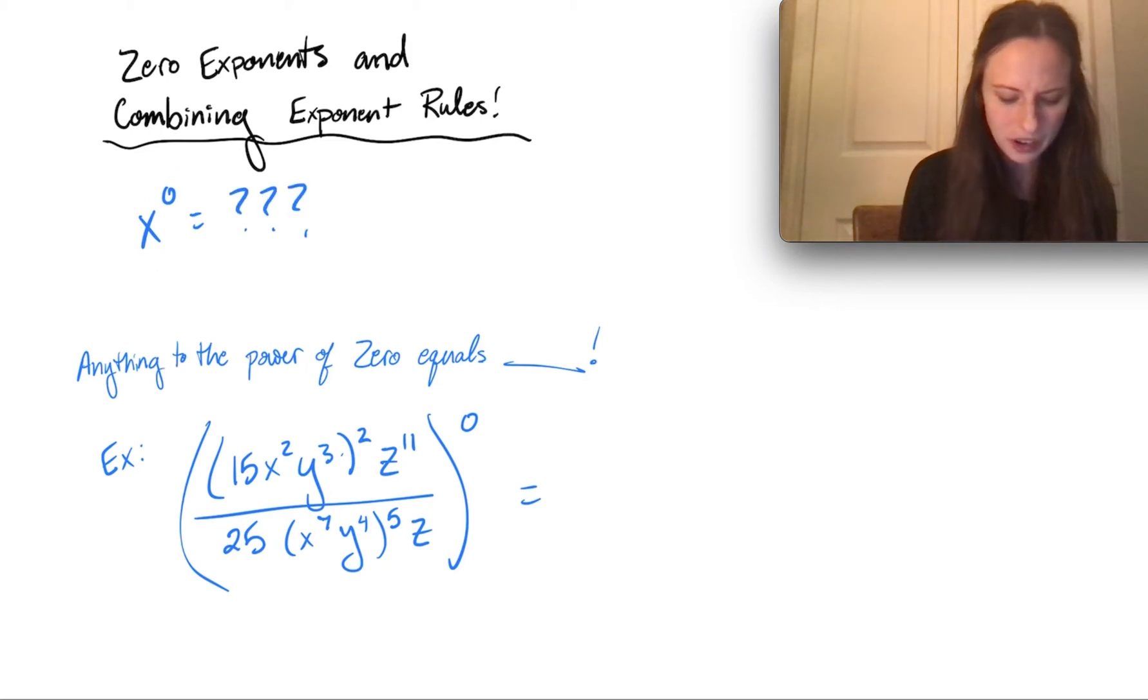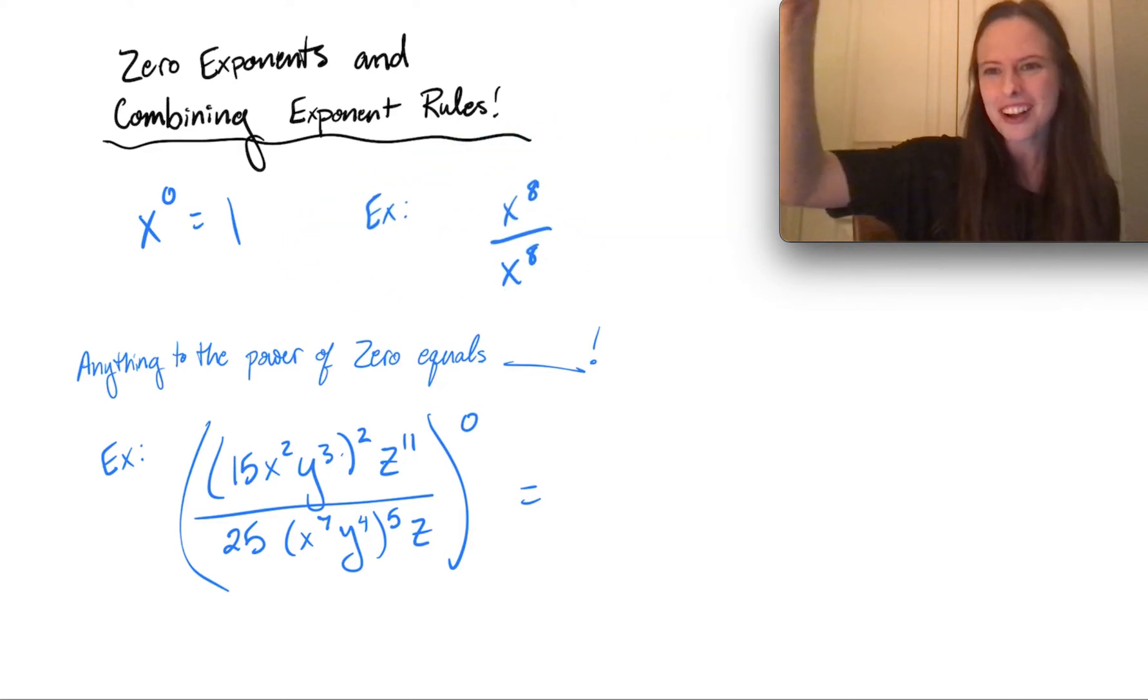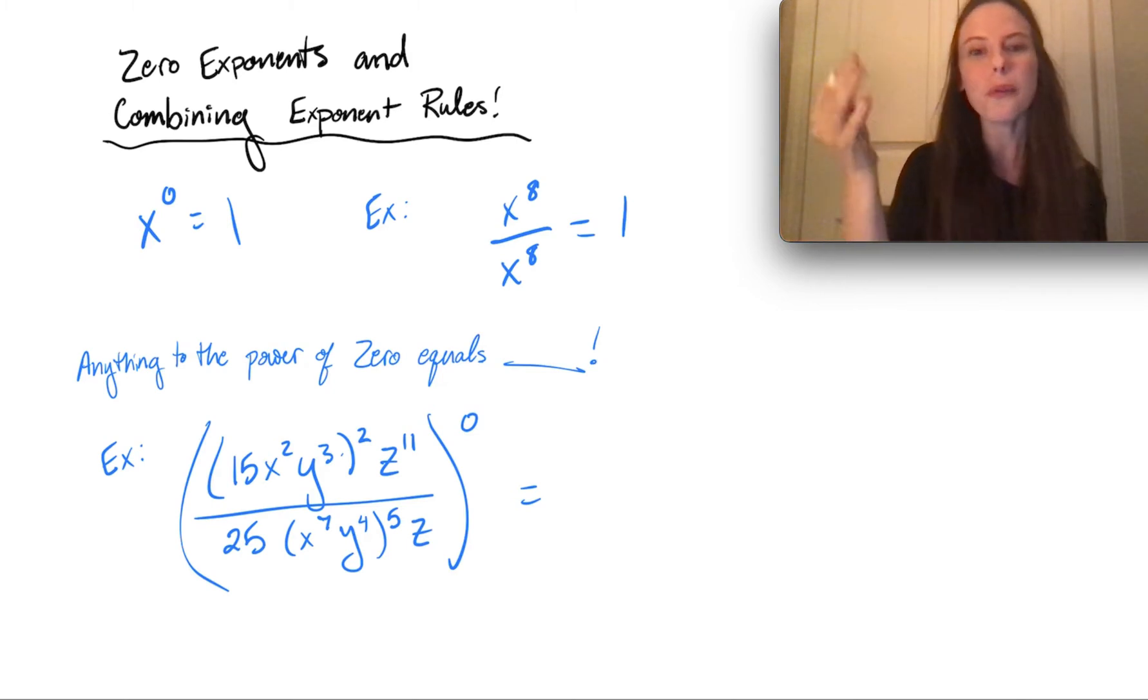x to the 0 actually equals 1, and I want to take a second to sort of explain why. So if you look at this example here, x to the 8 over x to the 8, well, we know this is the same thing divided by itself. So this whole thing has to equal 1, right?